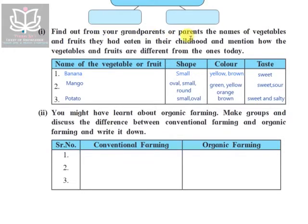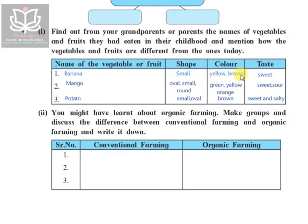Find out from your grandparents or parents the names of the vegetables and fruits they ate in their childhood, and mention how they are different from the ones today. This question can be solved on your own, but here is a sample answer. Bananas in childhood were small, yellow and brown in color, and sweet in taste — whereas bananas found in markets nowadays are very large.